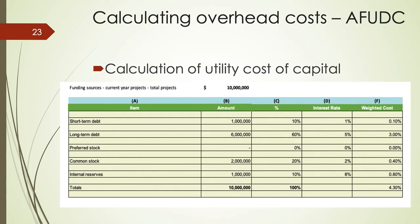In column C, the percentage represents the weighting of each financing option. Short-term debt: 1 million divided by 10 million equals 10%; long-term debt: 6 million divided by 10 million equals 60%, and so on. In column D, we list the associated interest rate: short-term debt is about 1%, long-term debt is about 5% for bonds, common stock pays a 2% dividend, and internal reserves carries the highest rate because the theory is we would pay ourselves a higher rate than we'd pay to stockholders or debt holders.